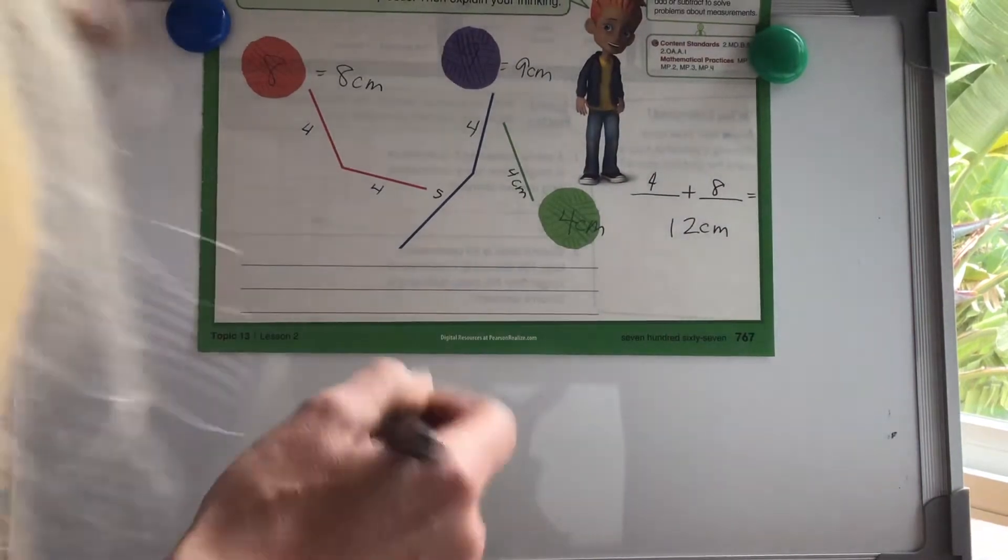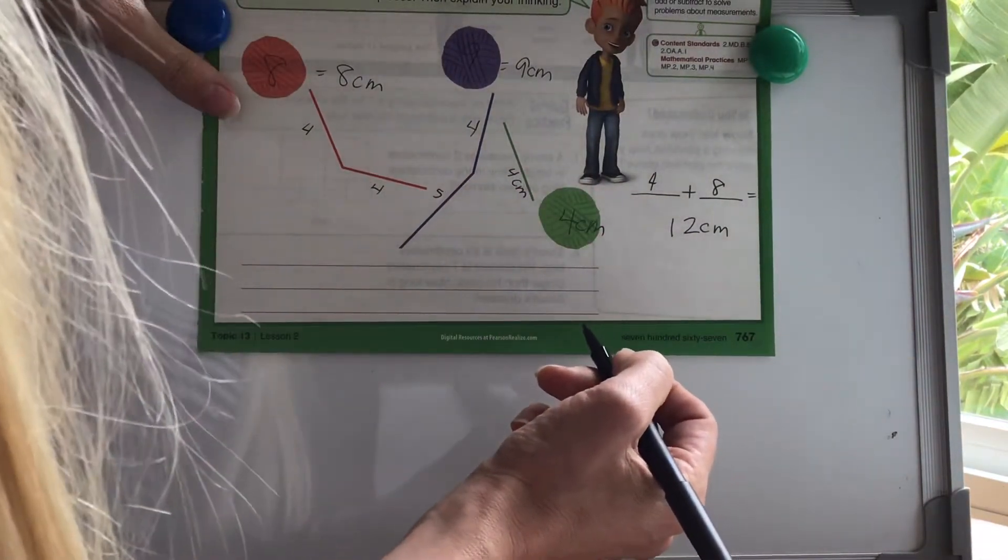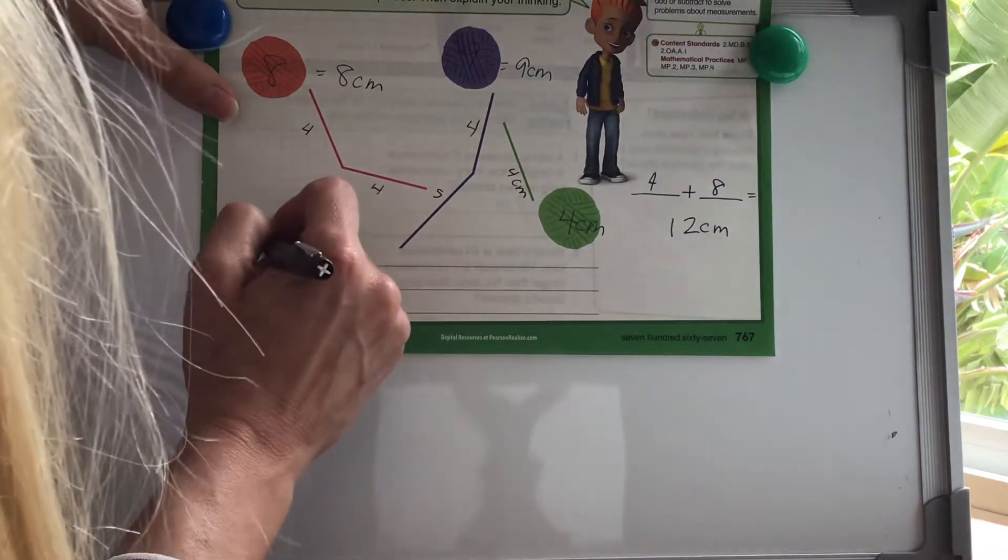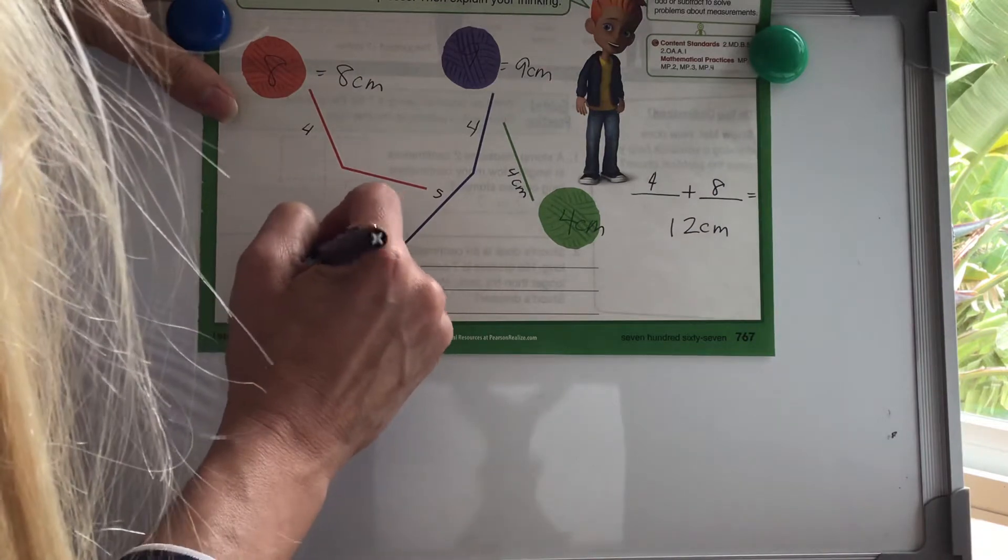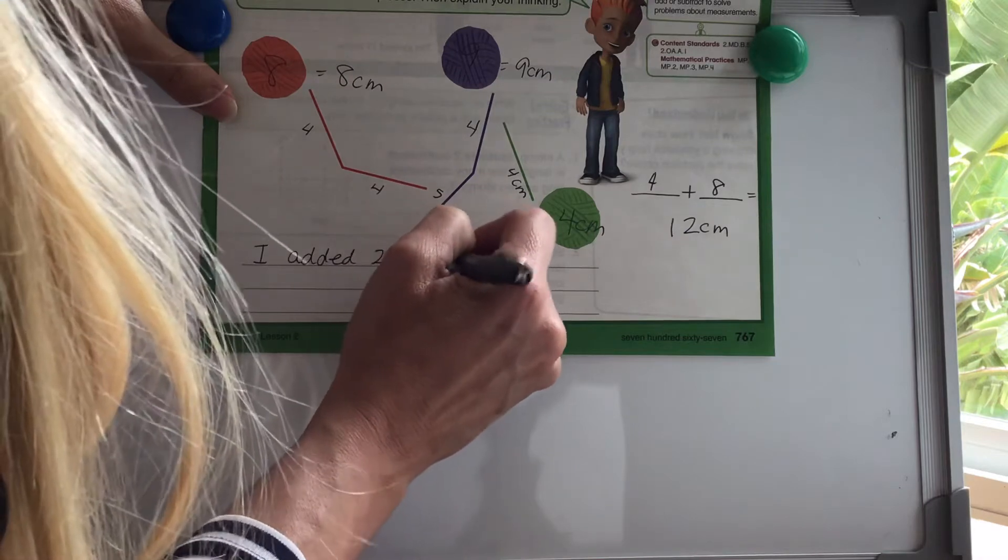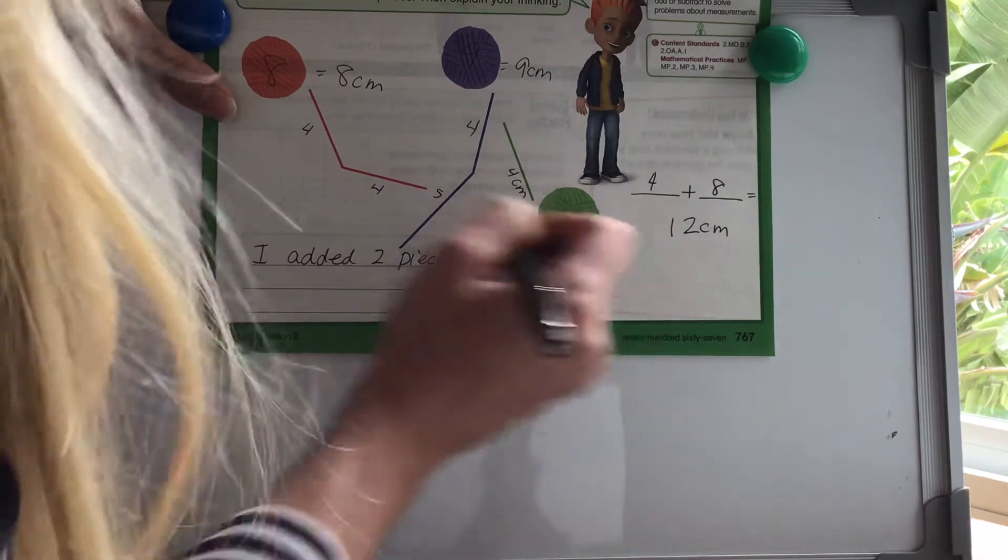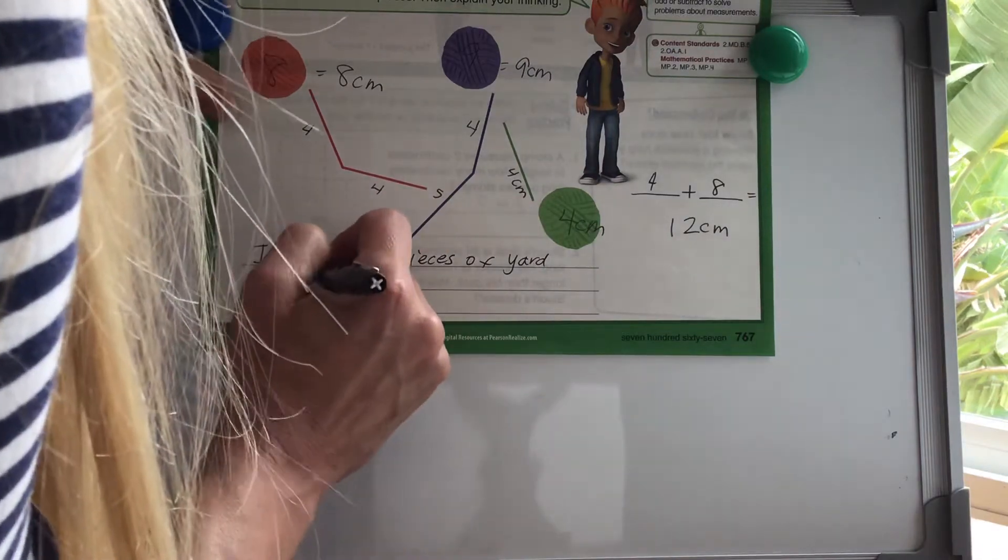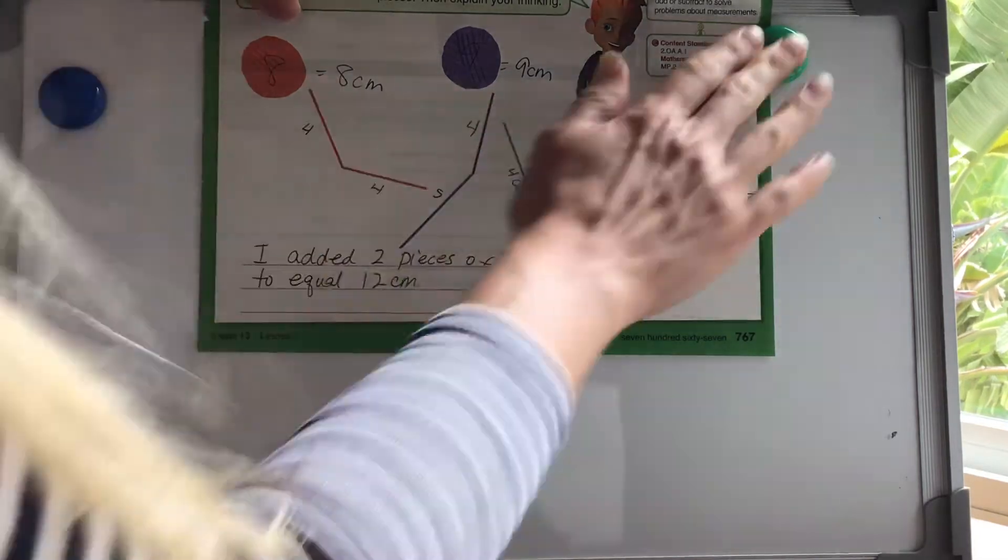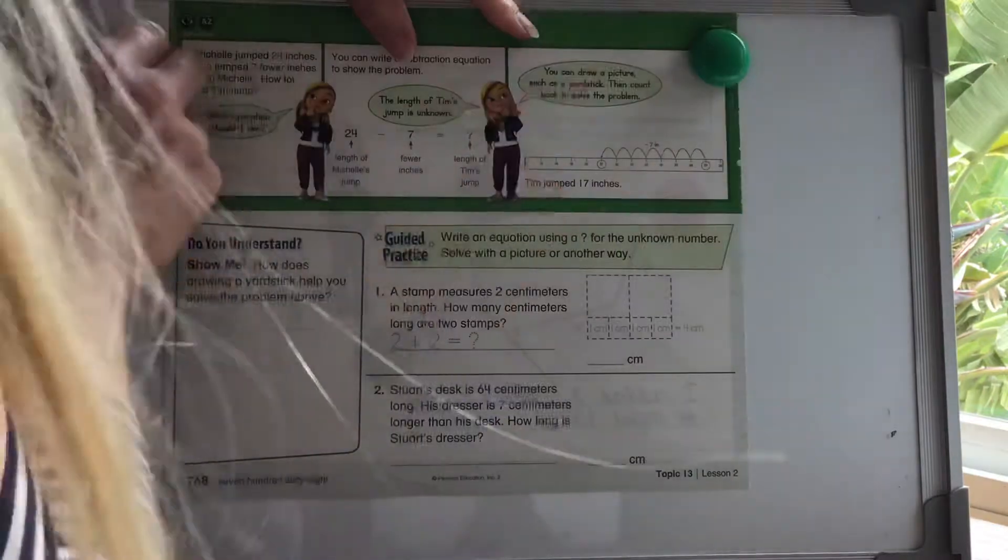Then it says explain your thinking. You can either write down your thinking or you can explain it to another adult or a sibling that you might have at the house, but you could say I added two pieces of yarn to equal 12 centimeters. All right, let's take a look at the back here.